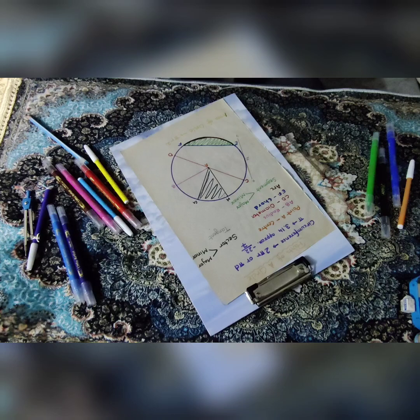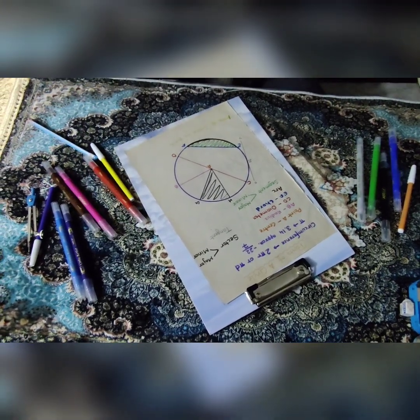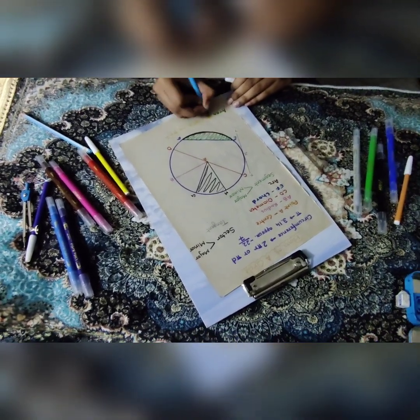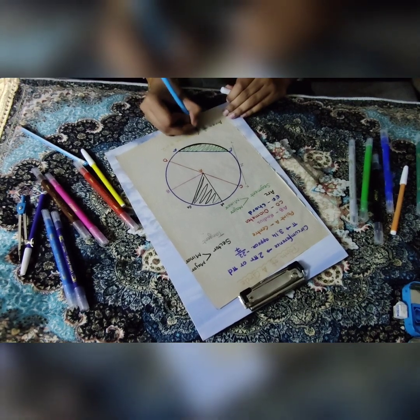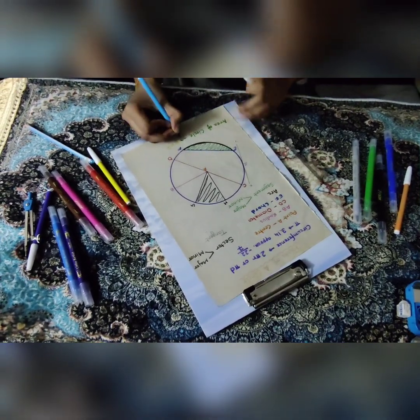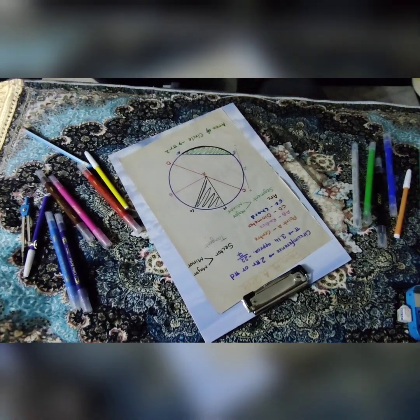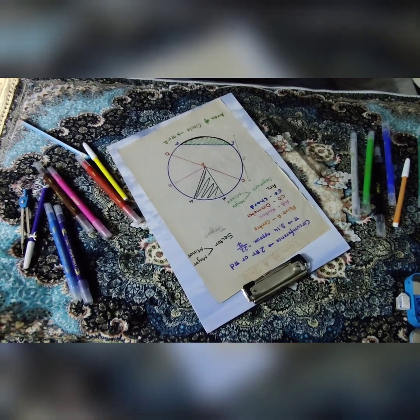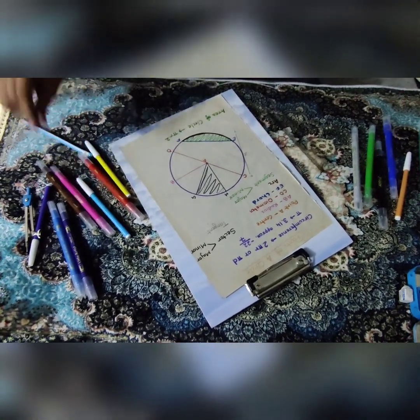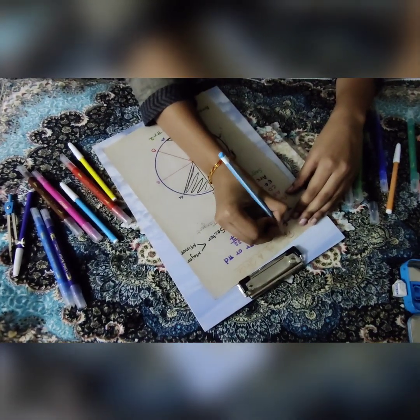So these were all the different parts of a circle. Now the last thing I'm going to tell you is about the area of a circle. Area of a circle has a simple formula, and that is pi r square. So we already discussed the value of pi which was 3.14 and radius squared.